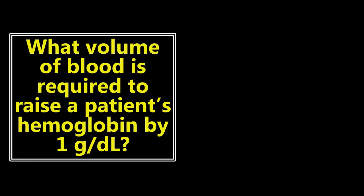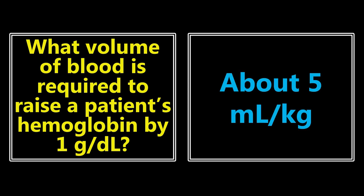This is the last one: what volume of blood is required to raise a patient's hemoglobin by one gram per deciliter? It's going to be about 5 milliliters per kilogram. So in a 70-kilogram patient, it ends up being somewhere about 350 milliliters. Remember, one unit of whole blood is about 500 milliliters, and one unit of packed red blood cells is about 350 milliliters — that's why we give it as one unit, and it should hopefully raise the patient's hemoglobin by about one gram per deciliter.